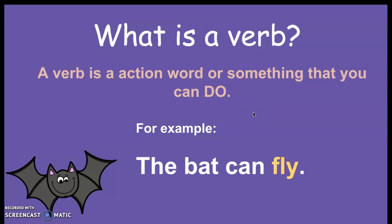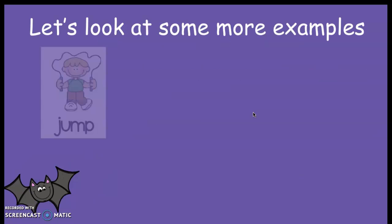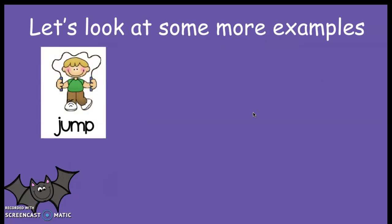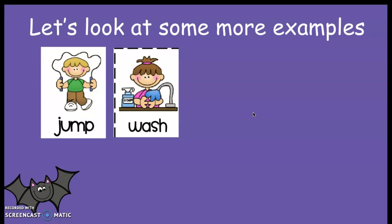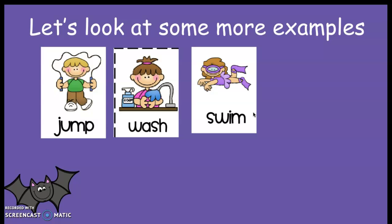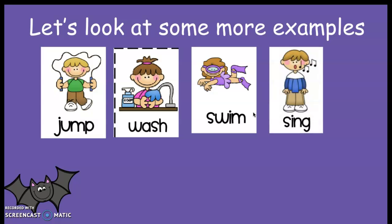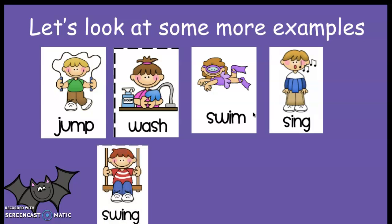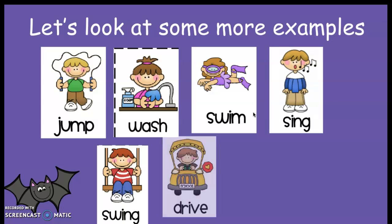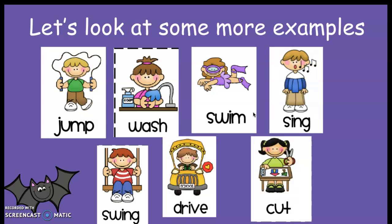So let's look at some more examples of verbs. Remember, a verb is something that you can do. For example, you can jump — that is an action word, to jump, like jump rope. Washing our hands: the girl washed her hands, the action would be wash, the verb would be wash. To swim — I can swim. To sing — that is an action word. To swing. Drive. And cut.